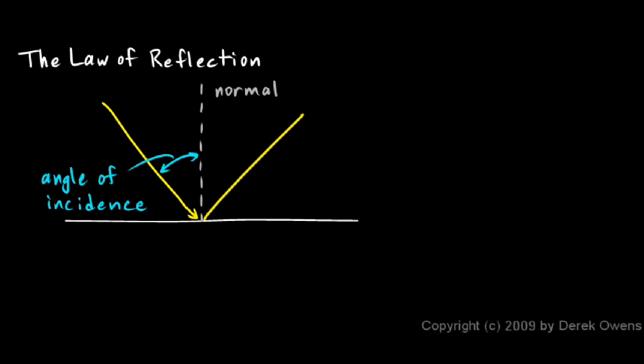And then the ray hits the surface and it bounces off. This angle here is called the angle of reflection, and this ray bouncing off is of course called the reflected ray.